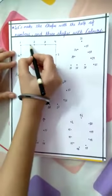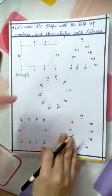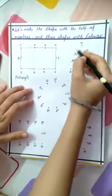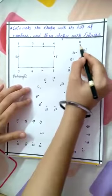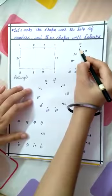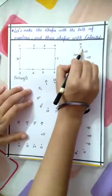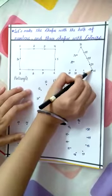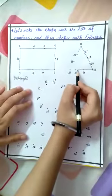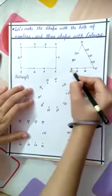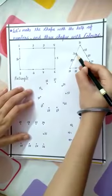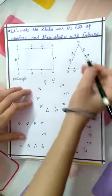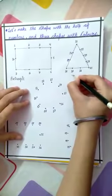Now for the next shape. The counting starts from twenty-one. Let's start: twenty-one, twenty-two, twenty-three, twenty-four, twenty-five, twenty-six, twenty-seven, twenty-eight, twenty-nine, thirty — and join back up to twenty-one. This is a triangle shape. A triangle has three sides.